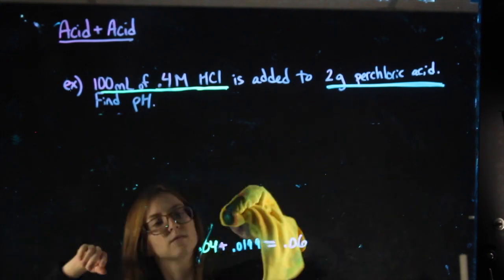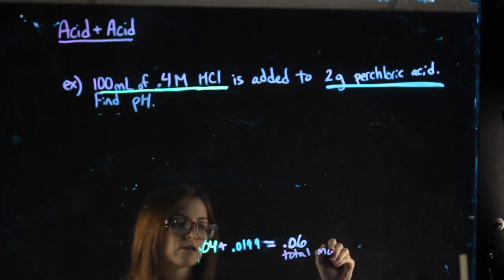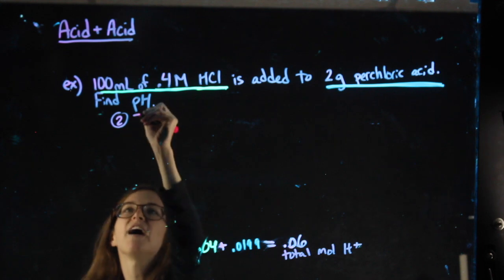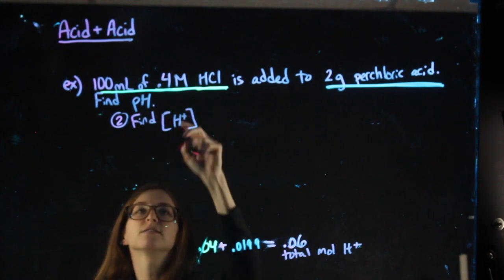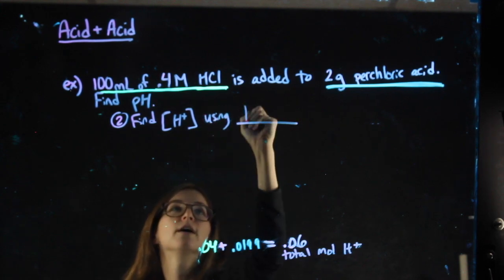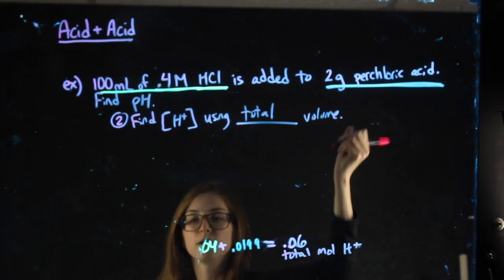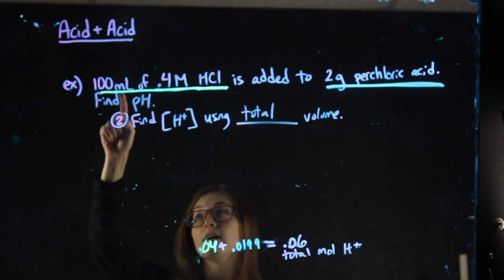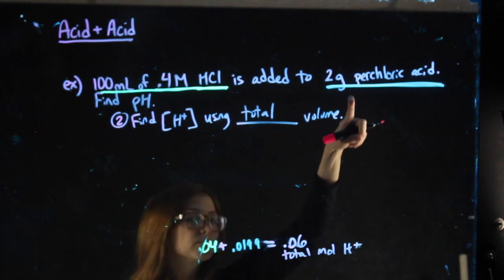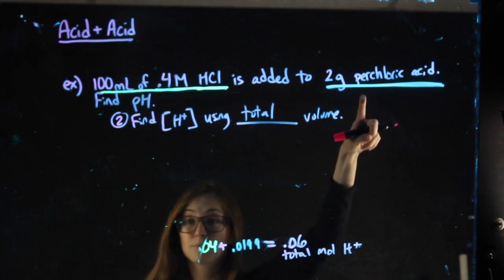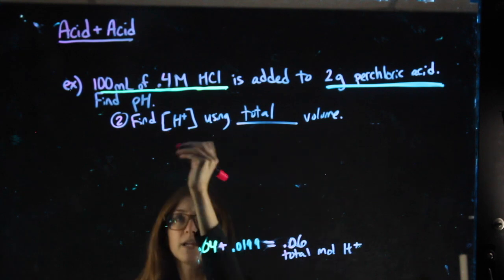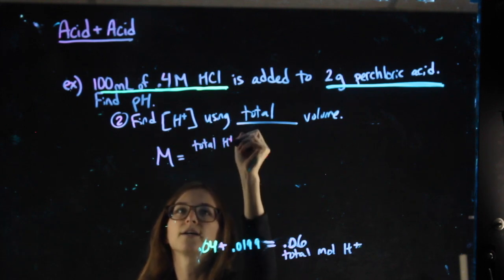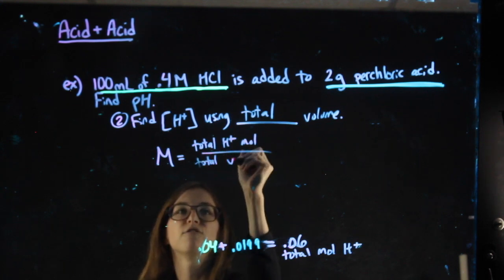Now, for my next step. So I'm going to leave the last part of my work here, just so we remember that this is my total moles of my H+. My next step in solving this problem is to find the concentration of H+, the molarity of H+, using, and I'm underlining it, total volume. So each acid brought some H+ to the table. Each acid might also bring some liquid, some volume, to the table. This problem, actually, there's the volume that HCl brings. 2 grams, that doesn't tell me a volume, so the perchloric acid isn't providing any volume whatsoever. So finding molarity, if we want the total H+ molarity, which we do, we want to use the total H+ moles over the total volume of the two acids.